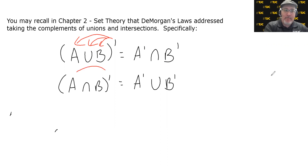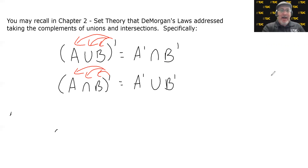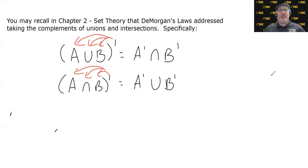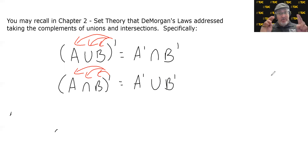That worked on both of them, where the complement got distributed not only to the sets but to the operation as well. I'm not saying the complement of a union is an intersection and vice versa — it's just a gimmicky way of remembering DeMorgan's Laws for set theory, saying that if you distribute a complement across a union or an intersection, everything gets complemented, including the union and the intersection, so to speak.